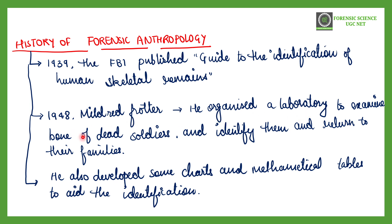In 1948, a person called Mildred Trotter organized a laboratory to examine the bones of dead soldiers, identifying them and returning the remains to their families. He also developed charts and mathematical tables to aid the identification of unknown bodies — an important milestone in forensic anthropology's history.